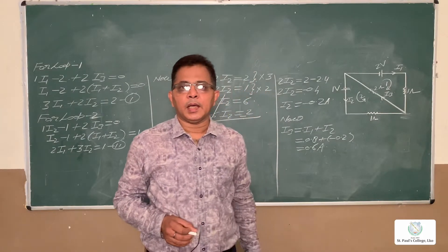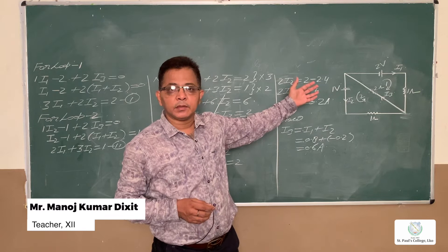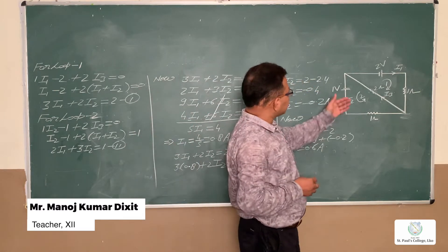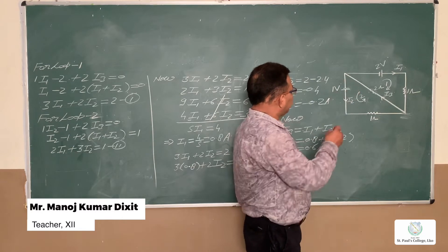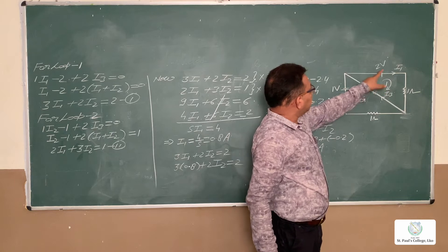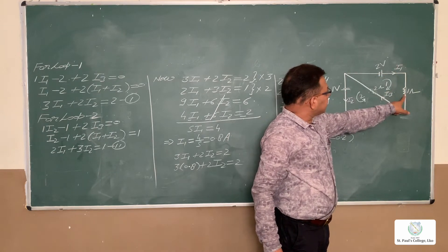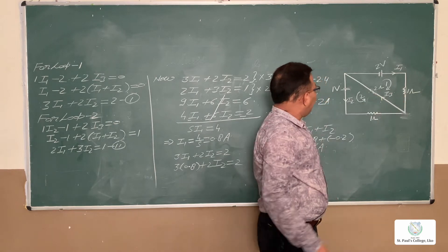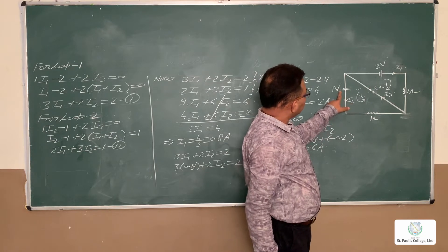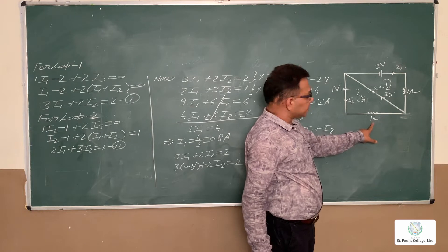Now students, I will take another example of Kirchhoff's second law numerical. You will see here in this circuit diagram: in loop 1, the EMF is 2 volts and current is I1 with resistance 1 ohm, and in loop 2, the EMF is 1 volt and current is I2 with resistance 1 ohm.